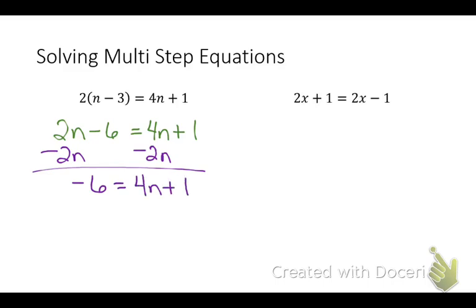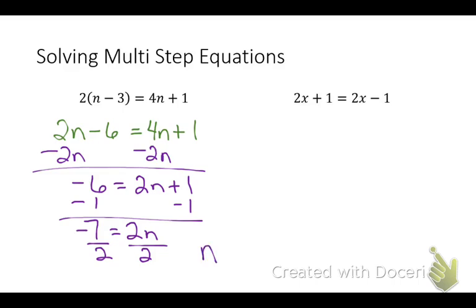So now I have negative 6 equals 4n plus 1. Now what do I do to both sides? I'm sorry, 2n, 2n, 2n equals 2n plus 1. Now what do I do to both sides? Subtract 1. And I get negative 7 equals 2n and divide both sides by 2. You can leave it a fraction or you could say negative 3 and a half. Either one would be fine.